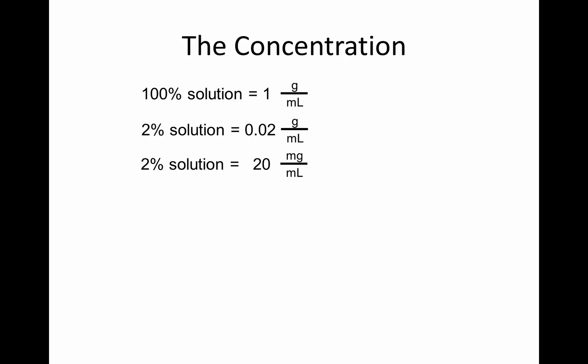Now, a 2% solution is 0.02. That's 2%, 0.02 grams per mil. That's how many grams of the solute would be in one mil of solvent. The solvent, in this case, being water. Now, we can also change that 2% solution into mg per mil. That is, we divide grams by 1,000 by multiplying the 0.02 by 1,000. So, by multiplying that, we get 20 mg per mil.